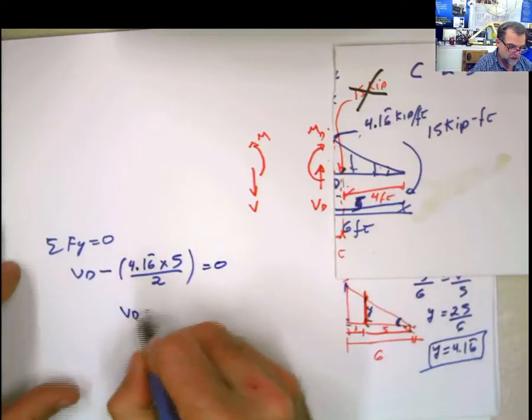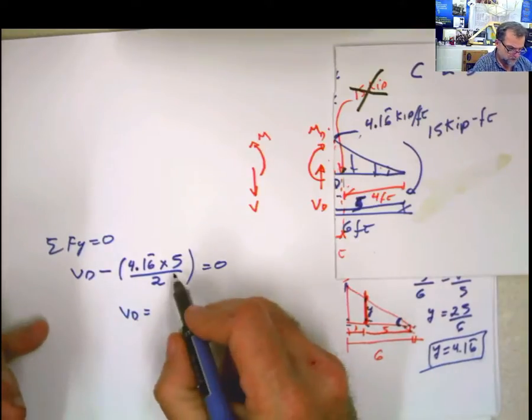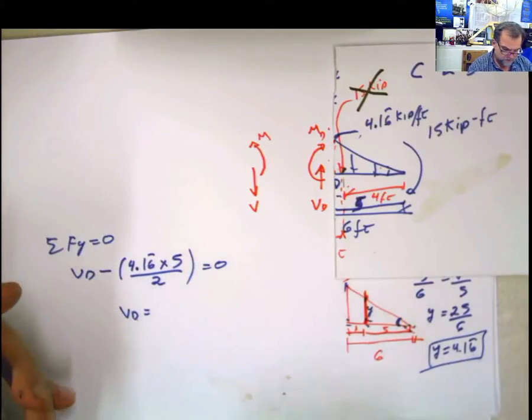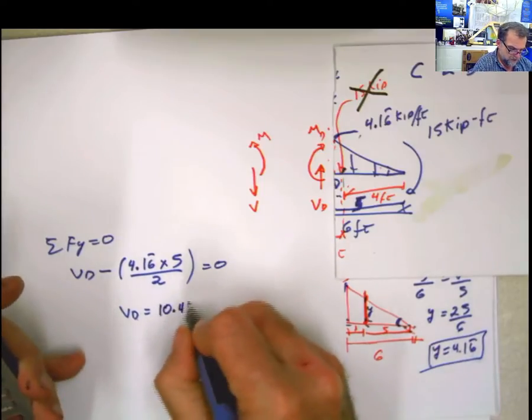Equals 0, so Vd would be equal to 4.16 times 5 divided by 2, which is 10.416. What was the value?